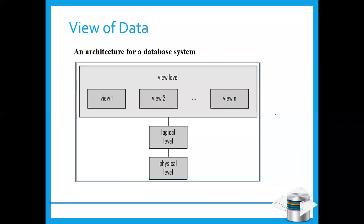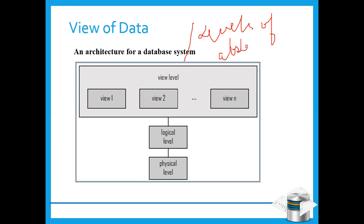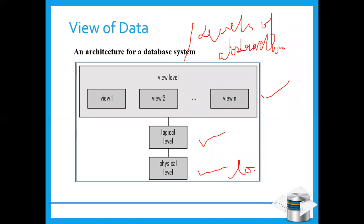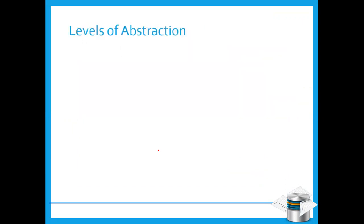Let's now see about views of data, also called levels of abstraction. There are three views of data or three levels of abstraction: the physical level, the logical level, and the view level. The physical level is the lowest level of abstraction, while the view level is the highest level of abstraction. Let's see what each one means.